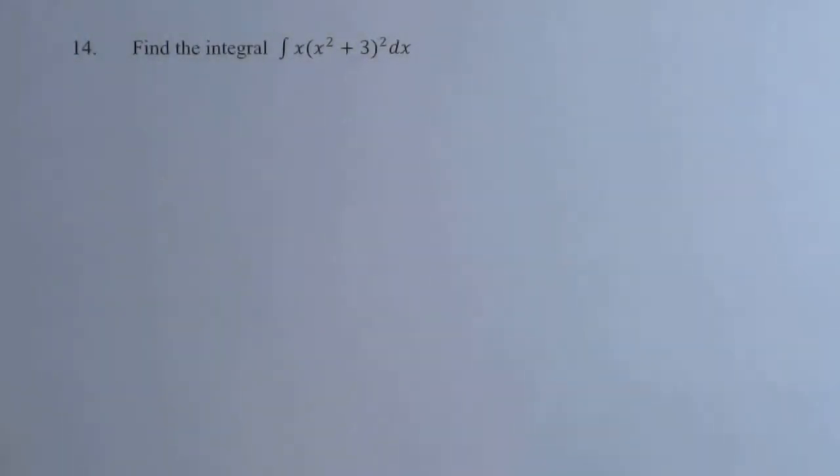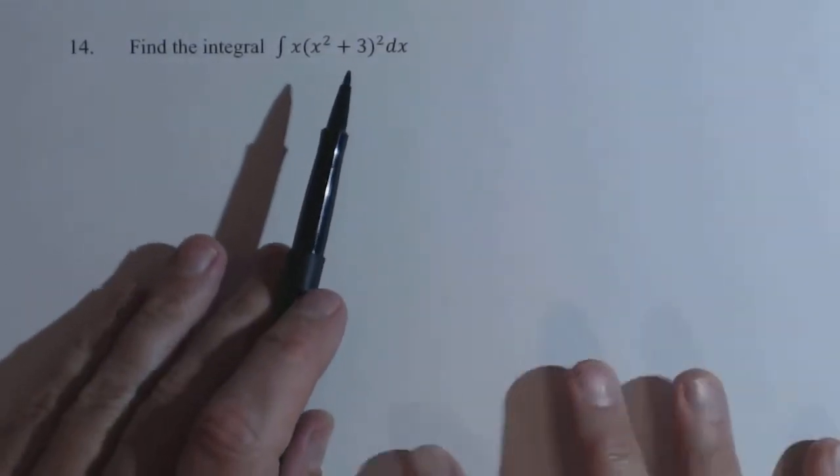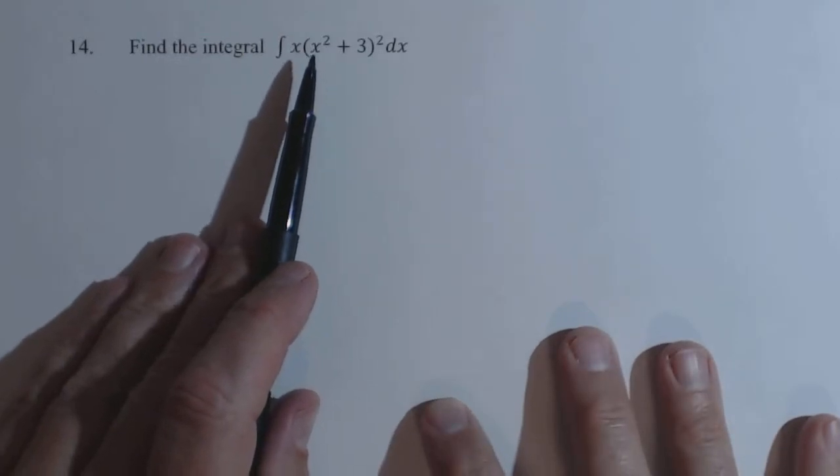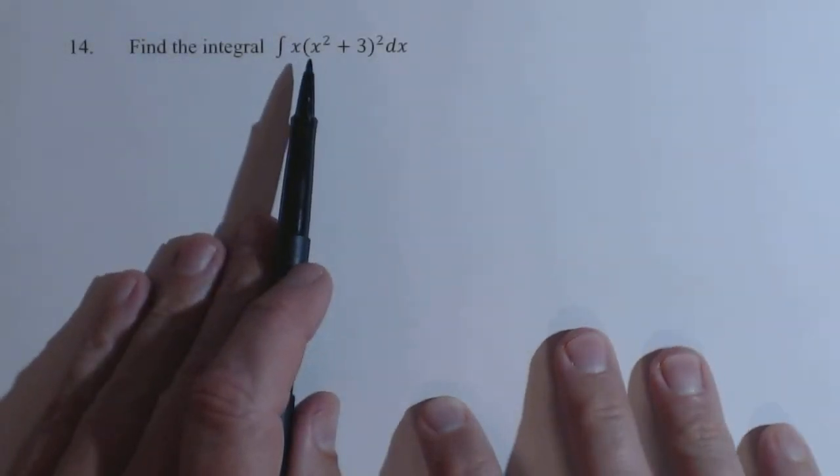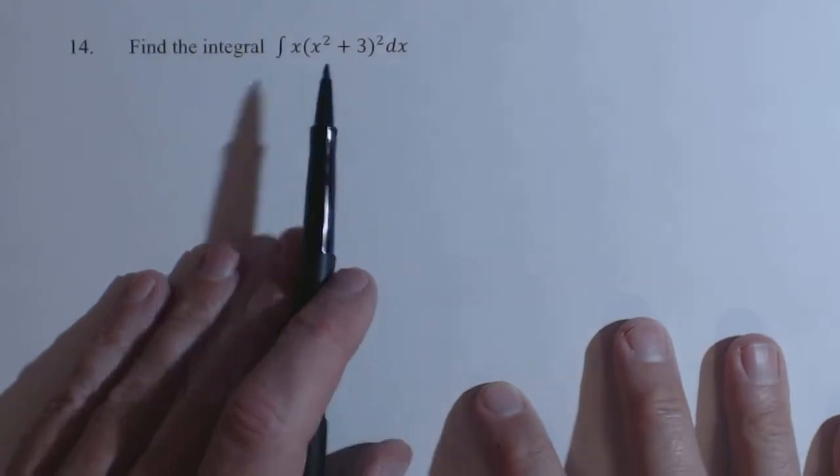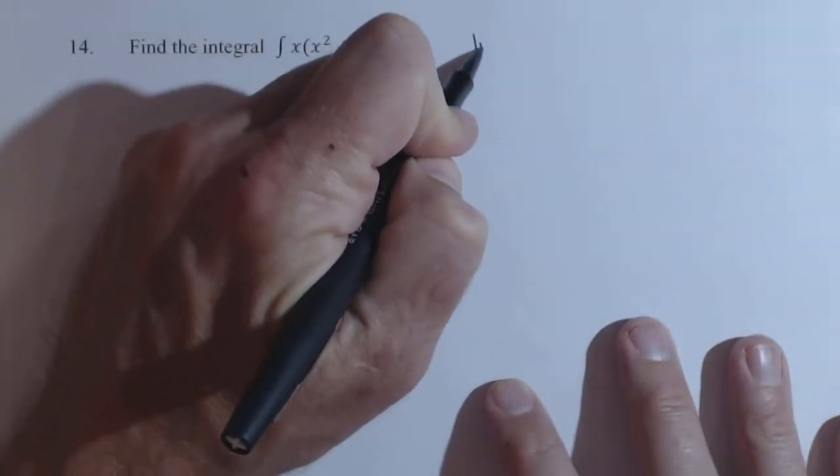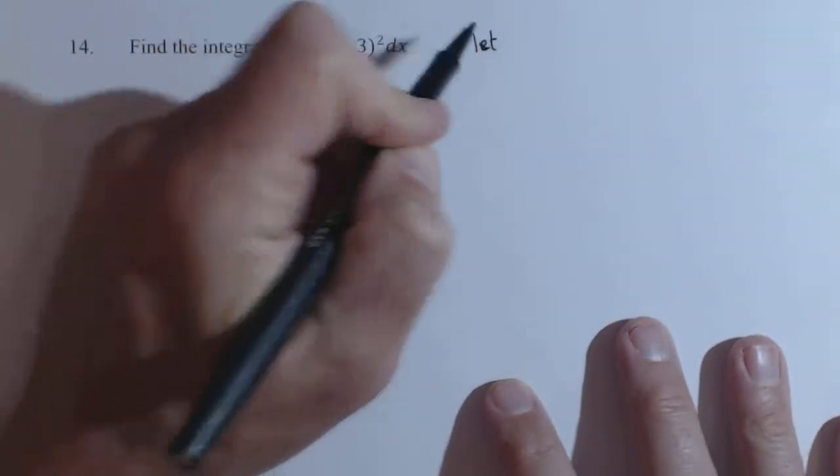So I have here an antiderivative we're gonna solve with u-substitution. It's not the only option. You do have the option of multiplying this out and distributing the x and doing it piece by piece, and it really wouldn't take too long. But I think a lot of times we need more practice with u-substitution than we do with that.